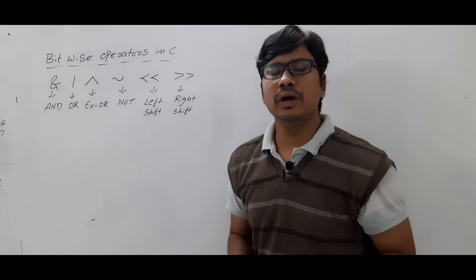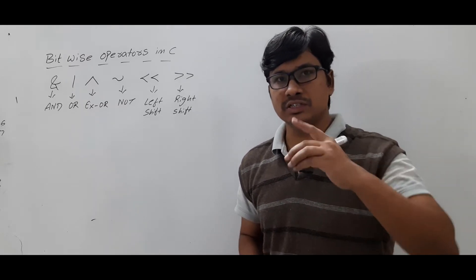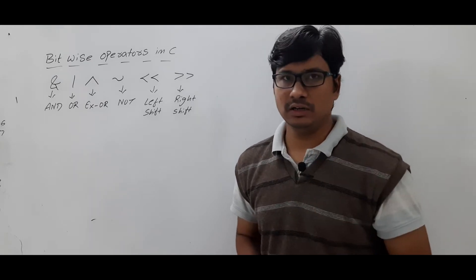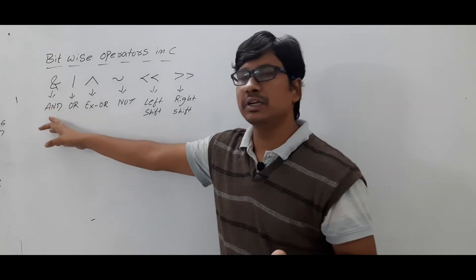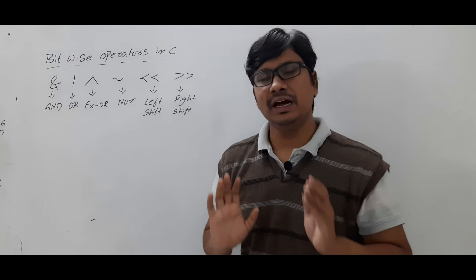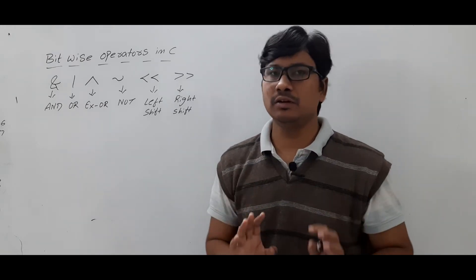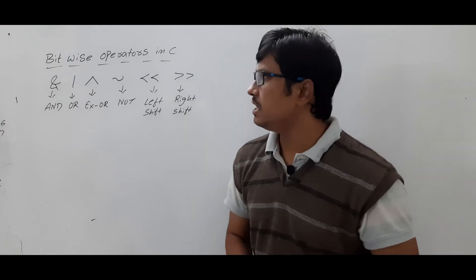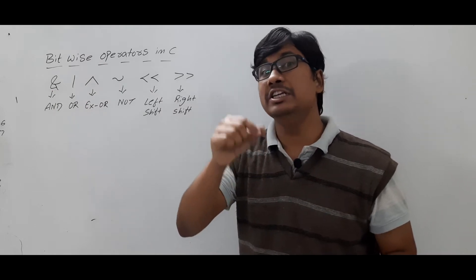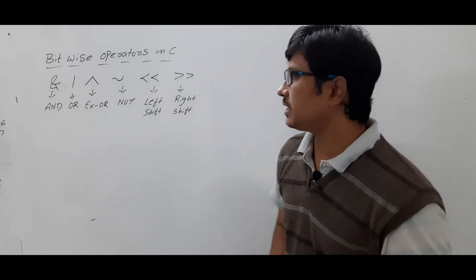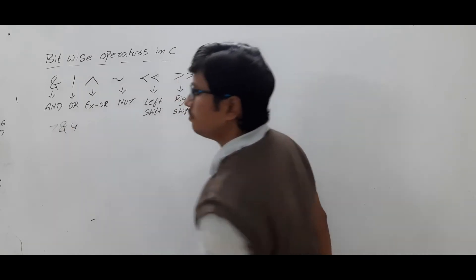Those who have watched my video on logical operators would have learned about logical AND, logical OR, and logical NOT. They would be confused — there is a logical AND and now a bitwise AND — how are they different? Don't worry, I will discuss the difference with an example. The basic difference is that the bitwise AND operator is performed on each bit.